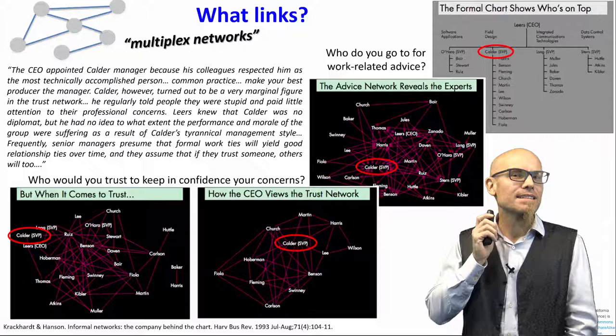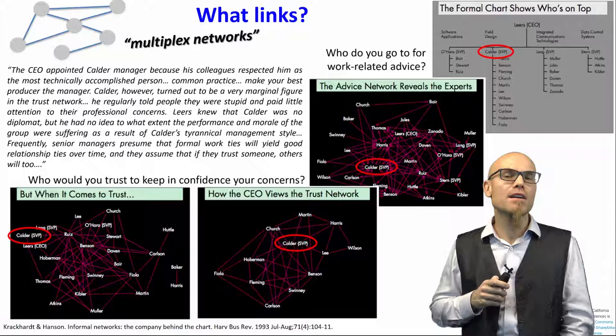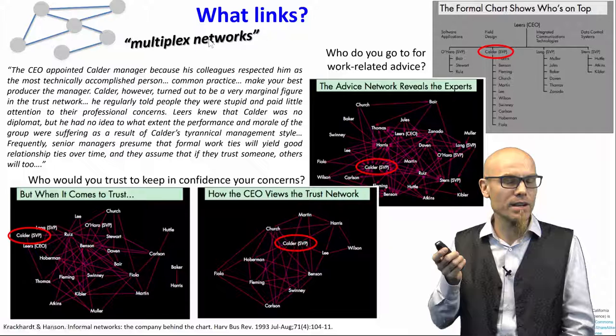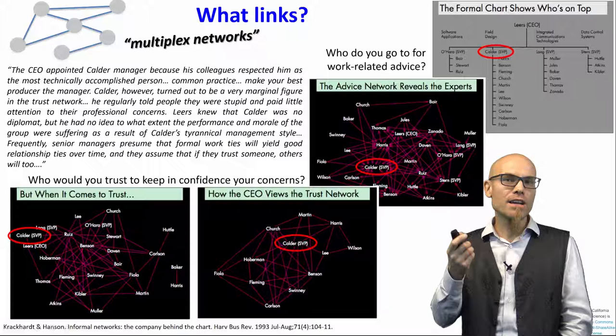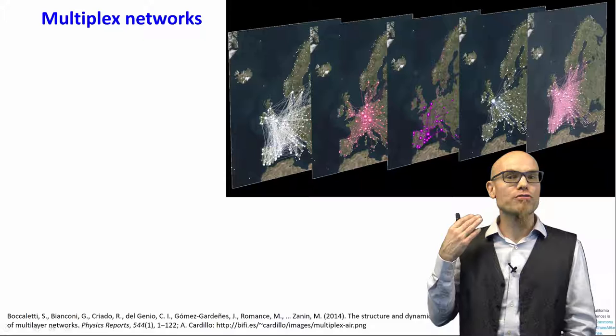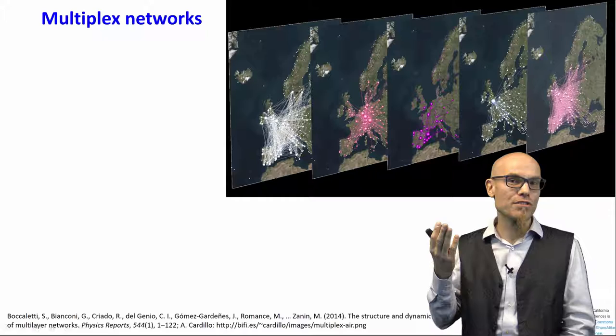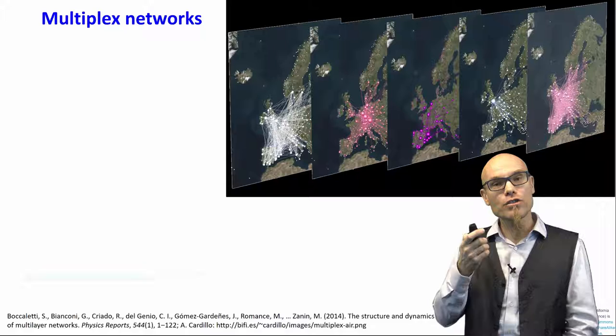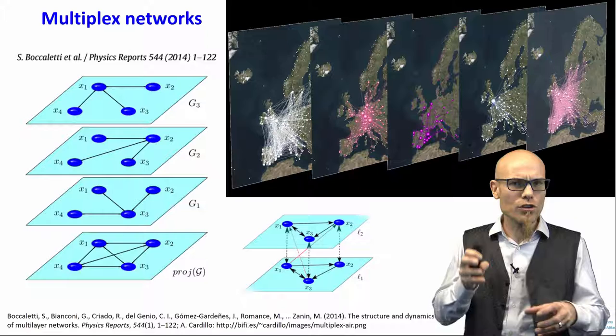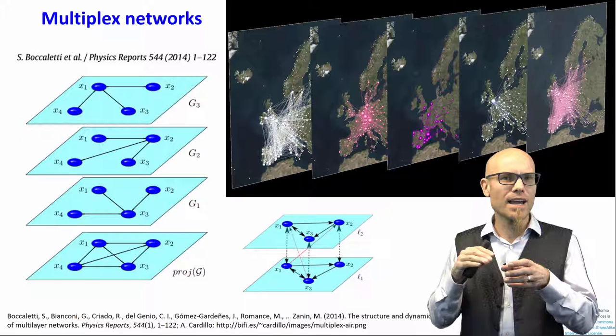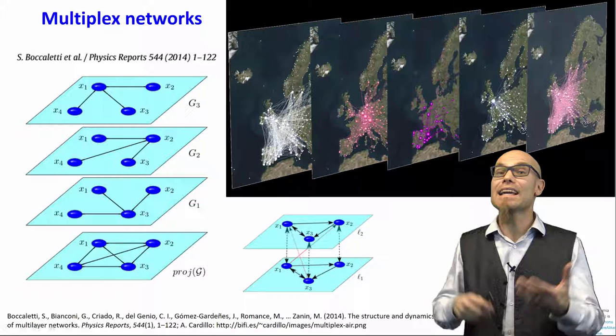Interestingly, if you do network analysis in companies, the person often found at the center of the network is the secretary — often the one with the lowest salary, but the one through whom everything flows. They actually know everything that's going on and play a much more important role in holding the company together than their formal position suggests. Different kinds of links — like an advice network and a trust network — within the same set of nodes is called a multiplex network, as opposed to a multimodal network which has different kinds of nodes.